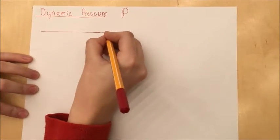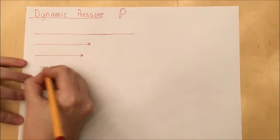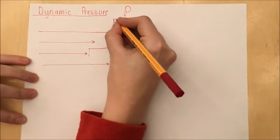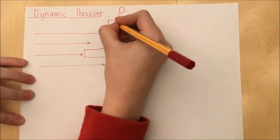Dynamic pressure, designated by curly p, applies to moving fluids. When a fluid is in motion, its kinetic energy is converted to pressure when the fluid flow is interrupted. As you can see in this diagram, streamlines are used to designate the flowing fluid.